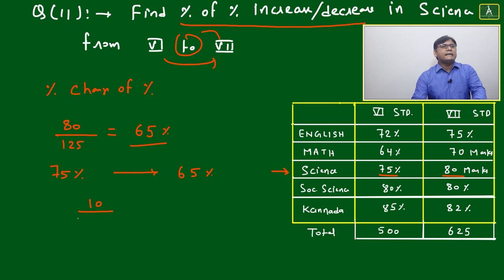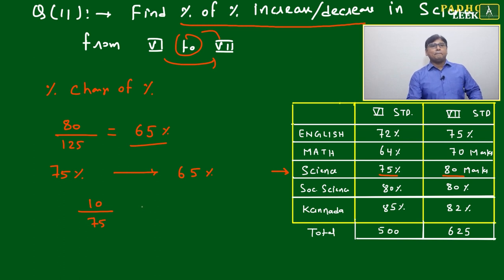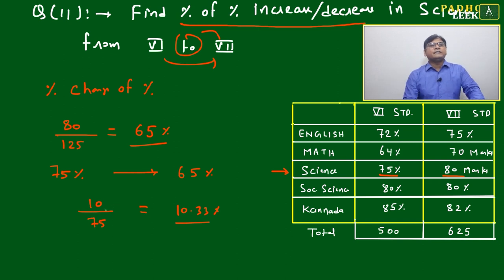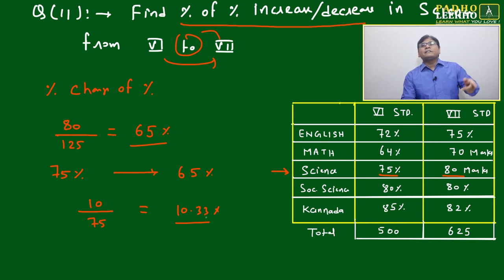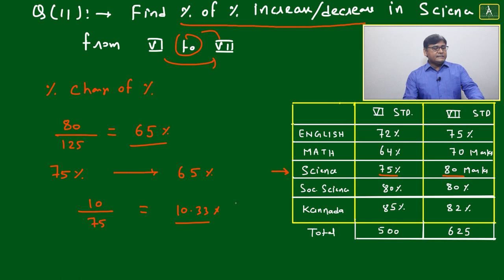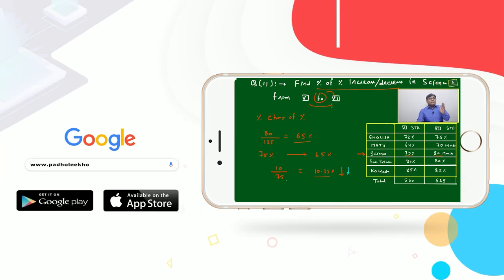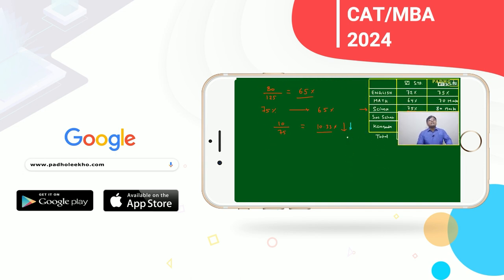From sixth to seventh, it goes from 75 to 65, so the difference is 10. The percentage change is 10 out of 75, which equals 10.33 percent. Since she went from 75 percent down to 65 percent, this is a decrease. The percentage decrease in science marks from sixth to seventh standard is 10.33 percent.